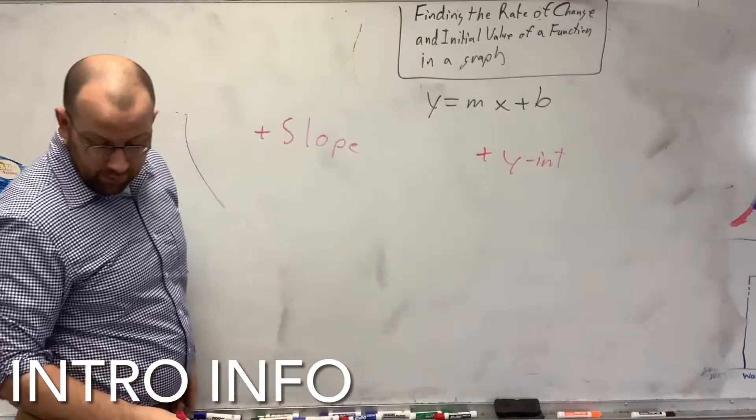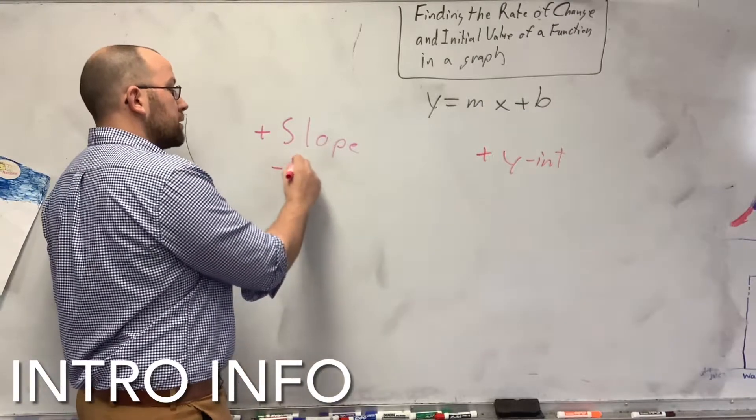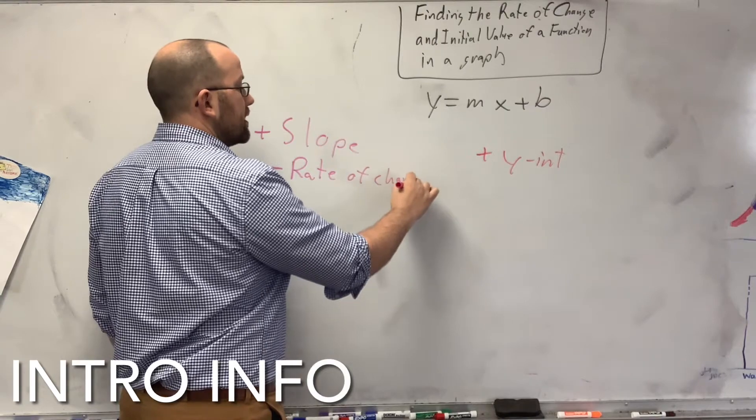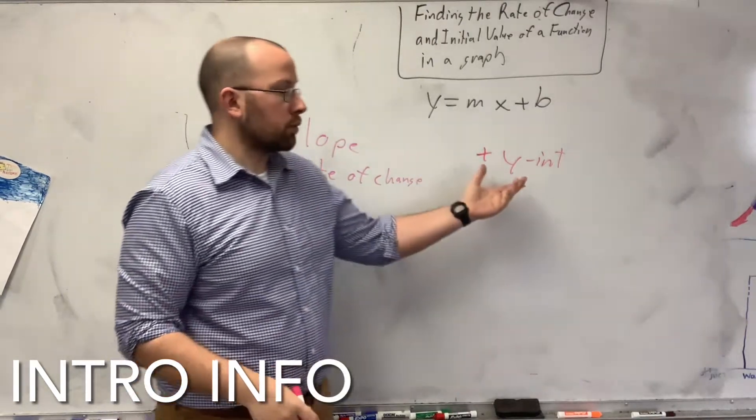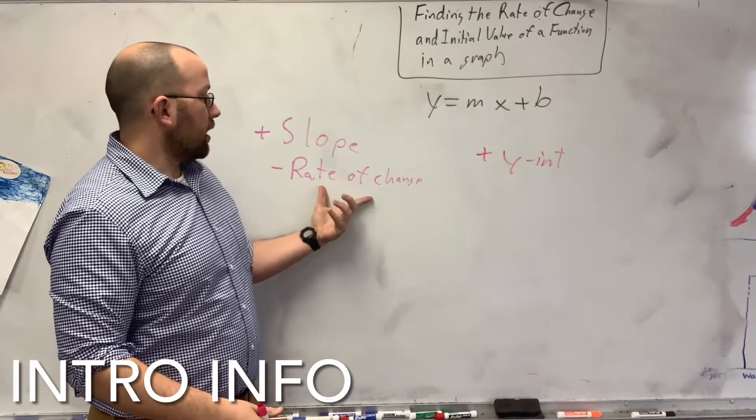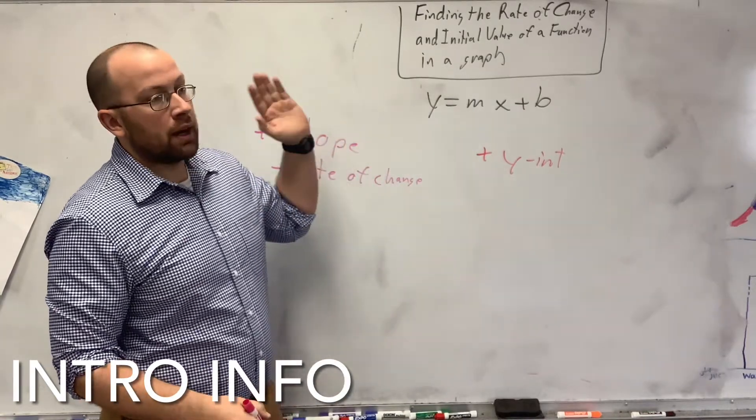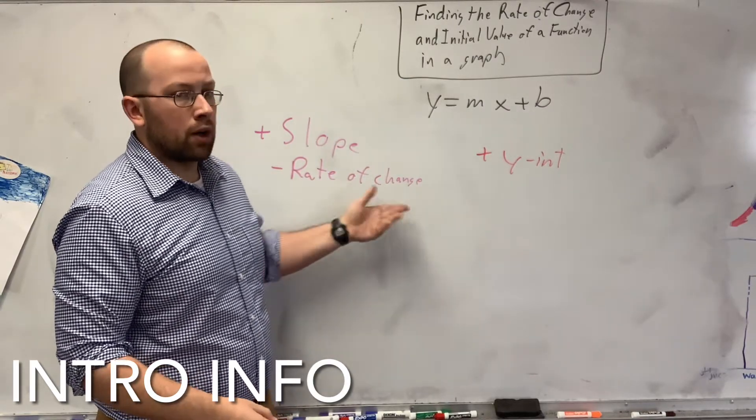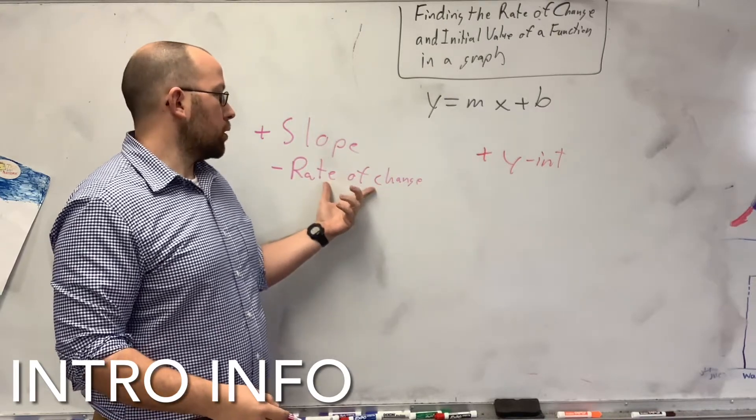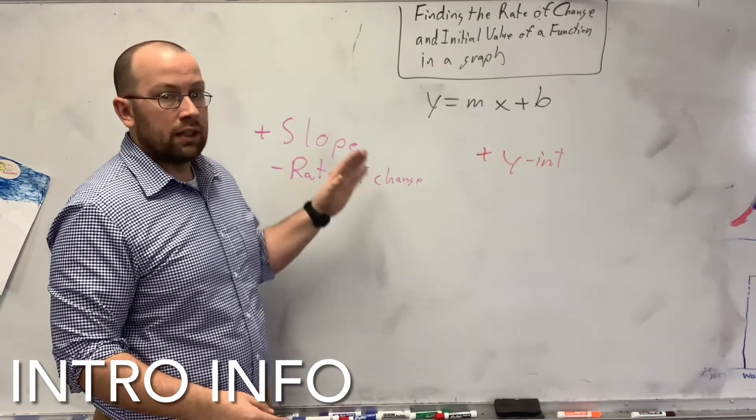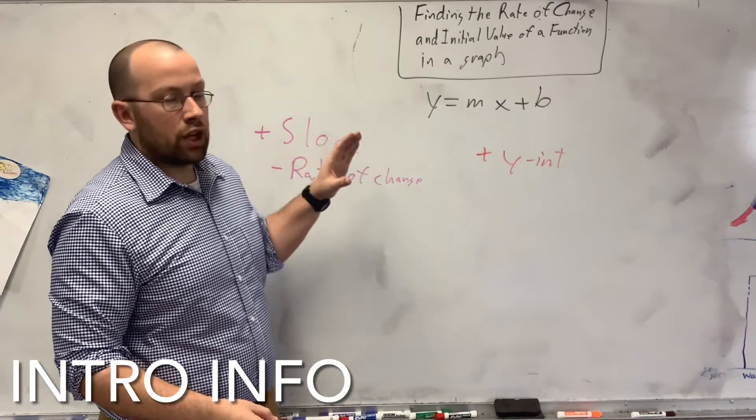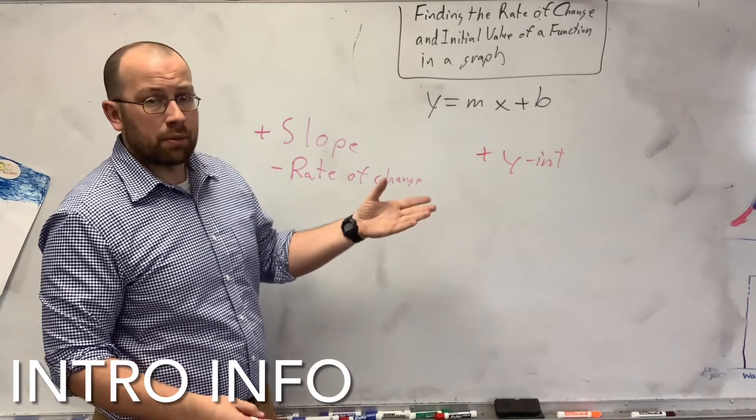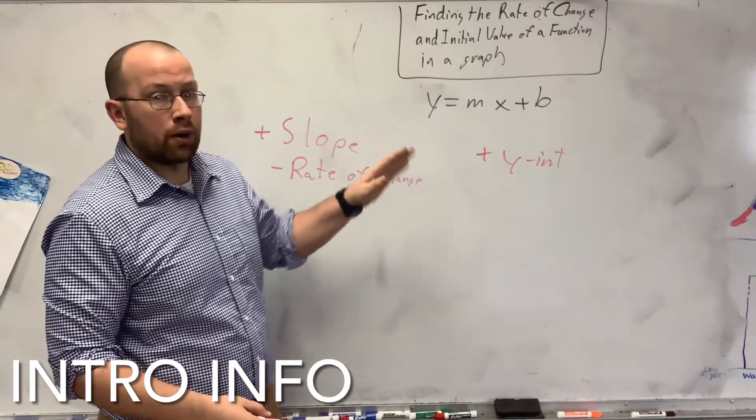We're going to talk about the slope first. The slope is also known as the rate of change. This is how fast you change from your y-intercept, or your initial value. If you're talking about a word problem, you'll see something like, I pay $25 per hour. The slope in that case would be $25 because it's changing $25 for every hour. If I said $10 per hour, it'd be changing at a rate of $10 per hour.